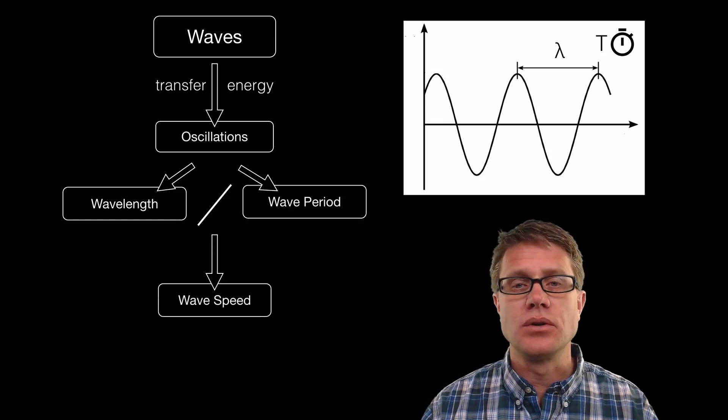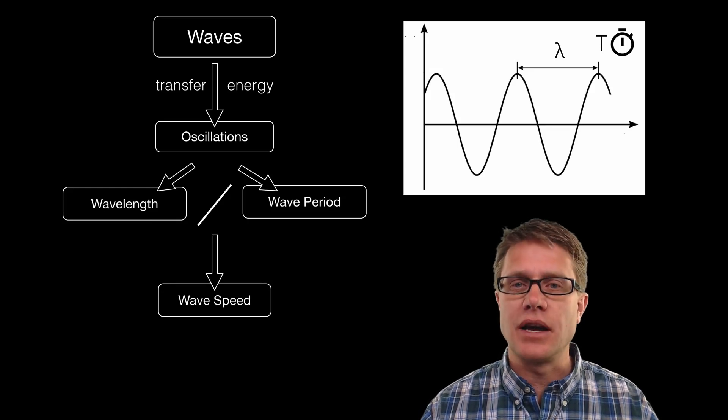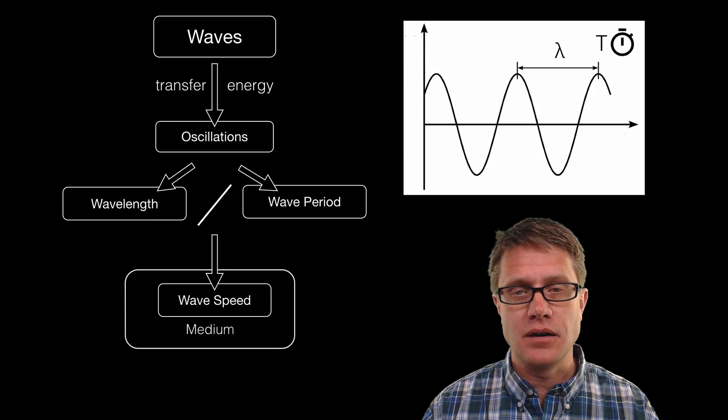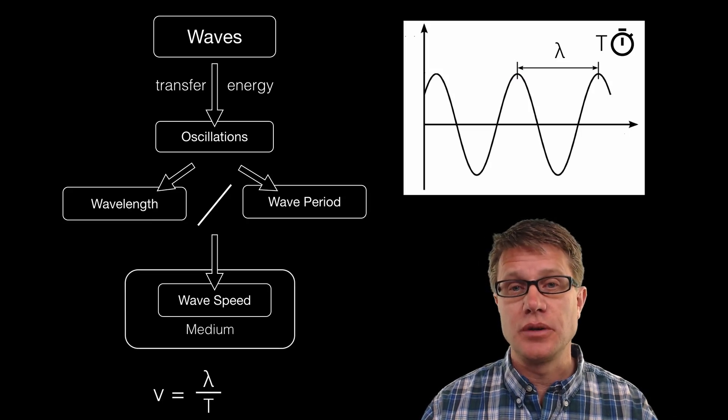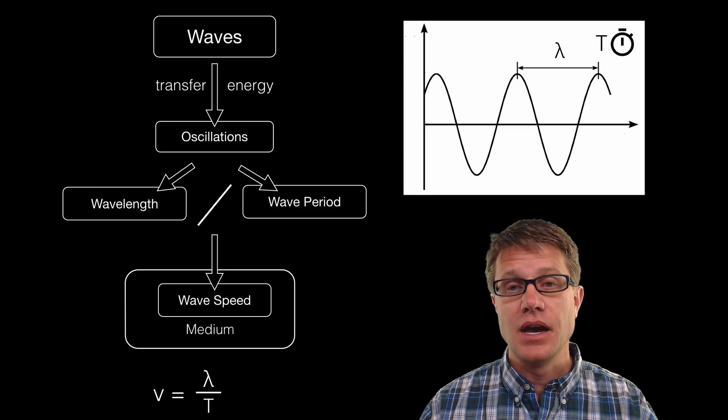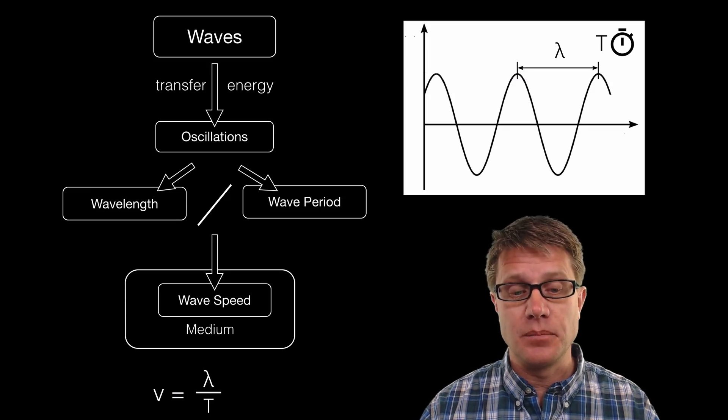Now the wave speed is going to depend on the medium. In other words, what it is in. For example, sound is going to go much faster in water than it does in air. So the medium determines that. But there is an established relationship between the velocity of the wave and the lambda divided by time, or the lambda divided by the period.